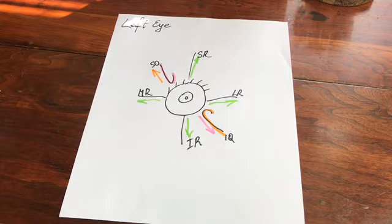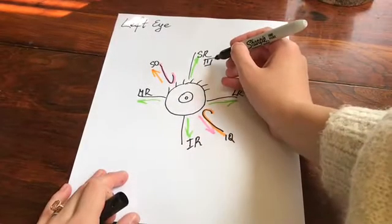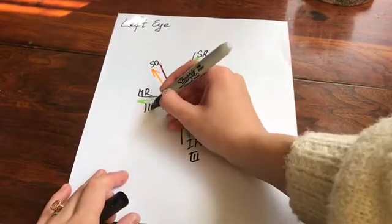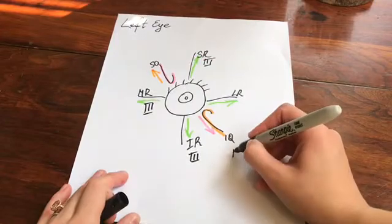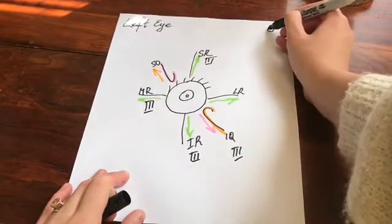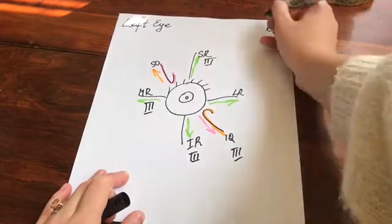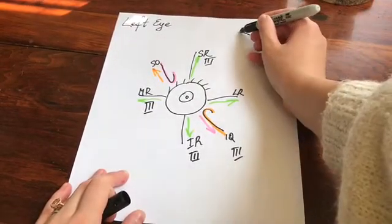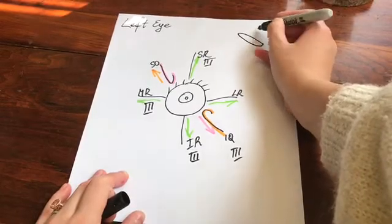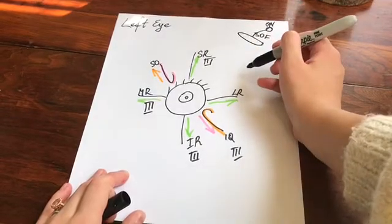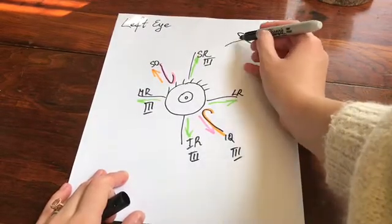The third cranial nerve is called the oculomotor nerve. It innervates the superior rectus muscle, inferior rectus muscle, medial rectus muscle, and inferior oblique muscle. The oculomotor nerve originates in the midbrain with its oculomotor nuclei, and it exits the skull through the superior orbital fissure — which, spoiler alert, all of them do.